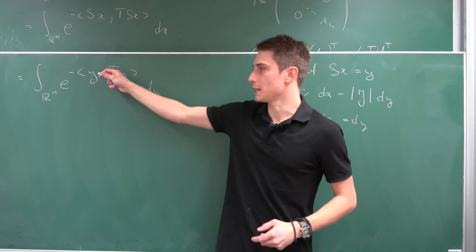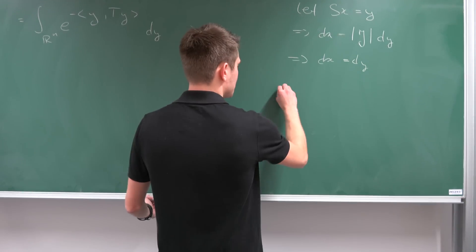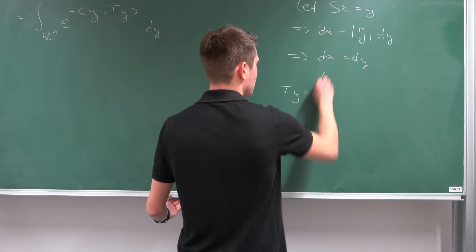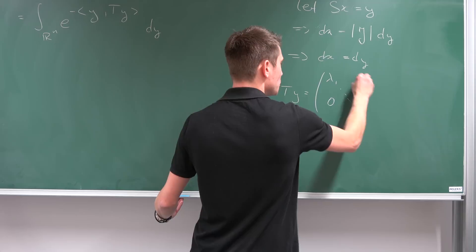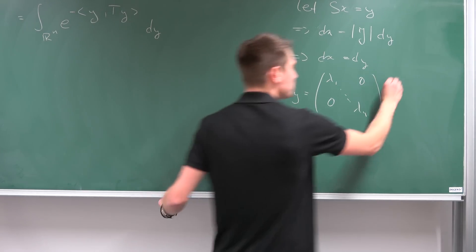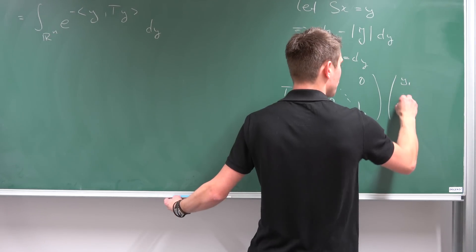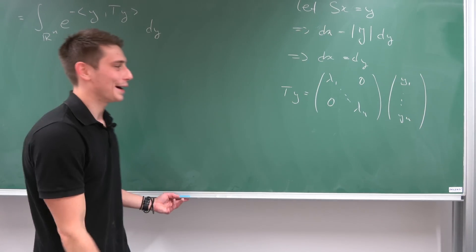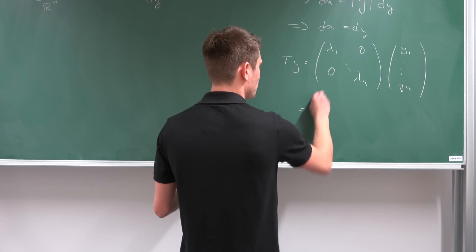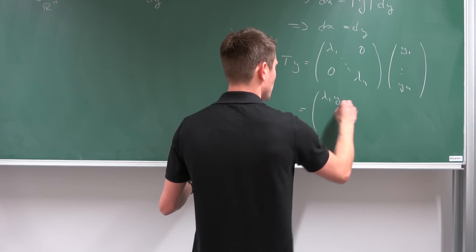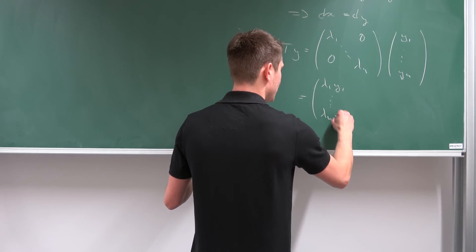And now if we take a look at t times y. What is this actually? So t times y is nothing but, well, this matrix lambda 1, lambda n with zeros in all the other places times, well, y1 to yn. Okay. And if we multiply this together, we are actually going to end up with, well, lambda 1, y1, lambda n, yn.